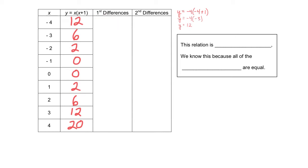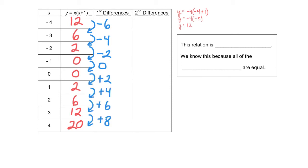Let's find the first differences. From 12 to 6, we are decreasing — going in the negative direction by 6. From 6 to 2, we're decreasing by 4. From 2 to 0, decreasing by 2. From 0 to 0, the change is 0. Then we start increasing: up 2, up 4, up 6, up 8. You'll notice this time the first differences are not identical.